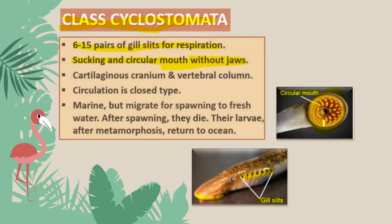They are without jaws. They have a cartilaginous cranium and vertebral column — cartilage is the endoskeleton element here. The cranium means the brain box, the covering of the brain, and both the cranium and vertebral column are made up of cartilage. Their circulation is of closed type, meaning blood flows within blood vessels after being pumped by the heart.